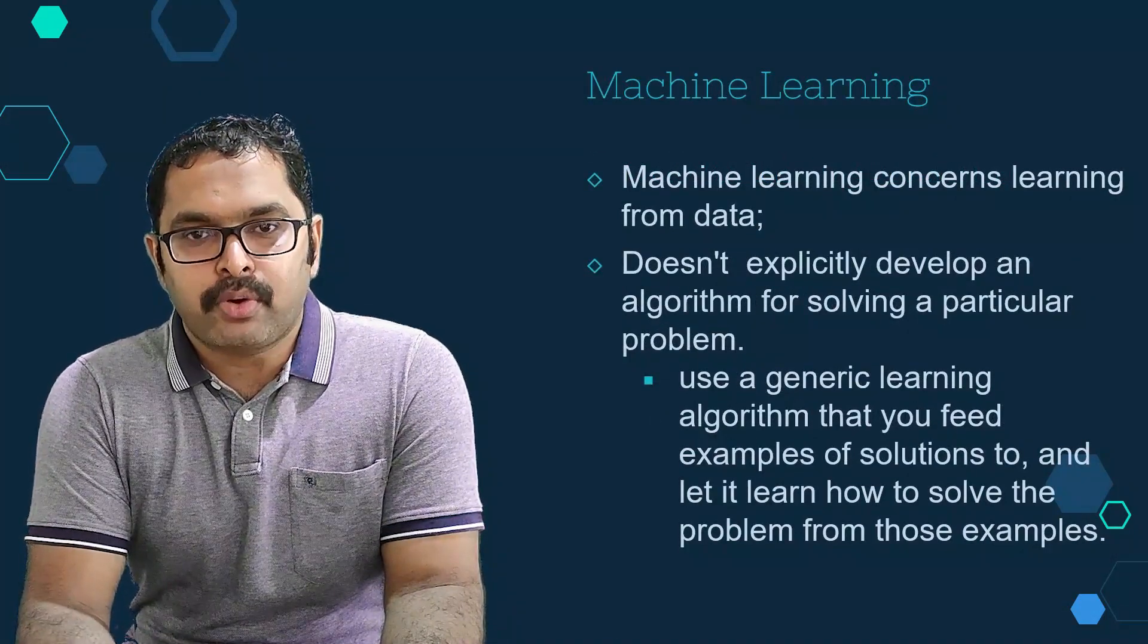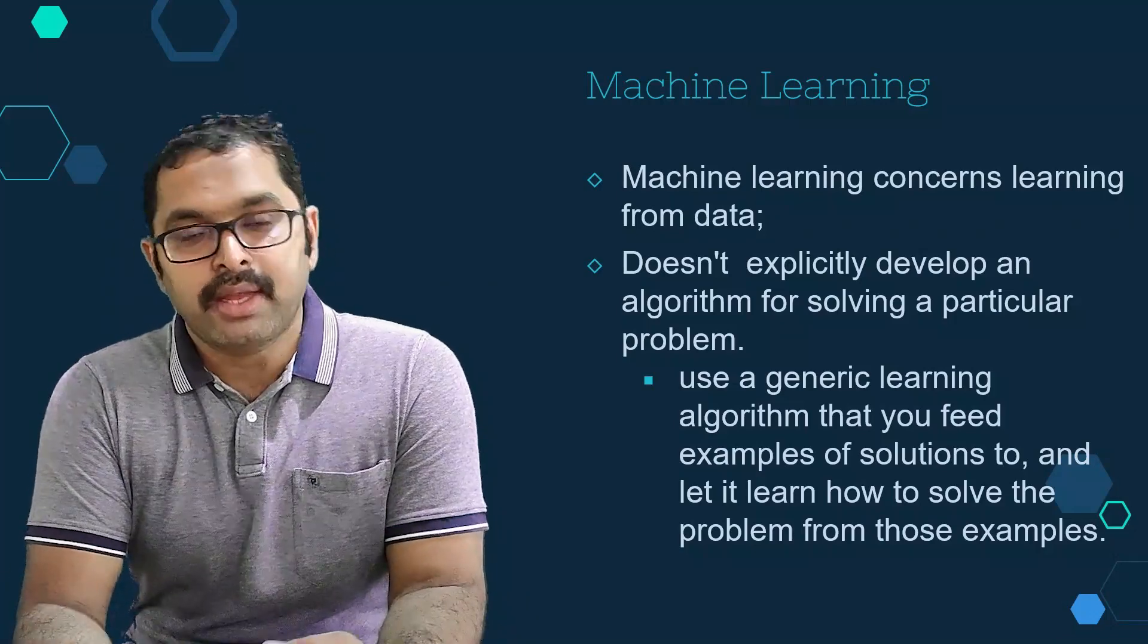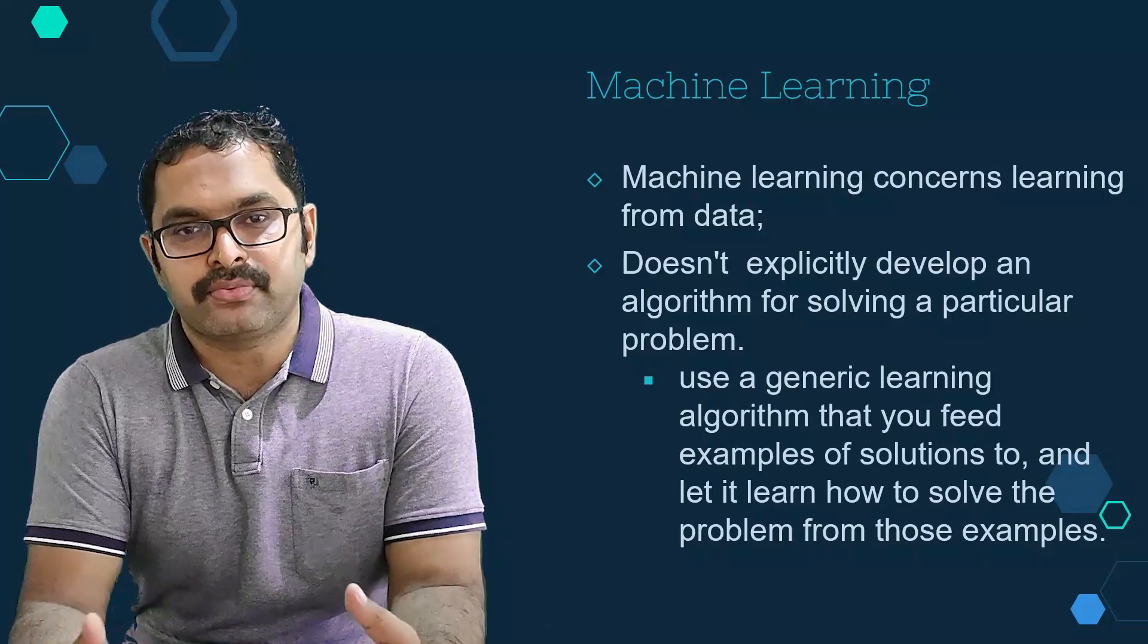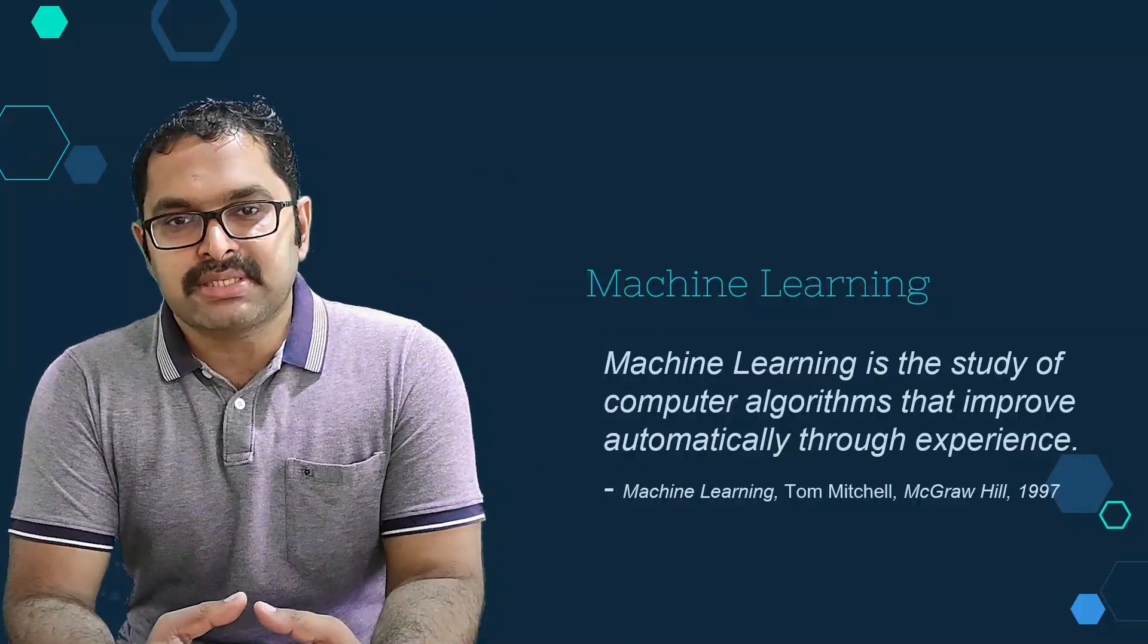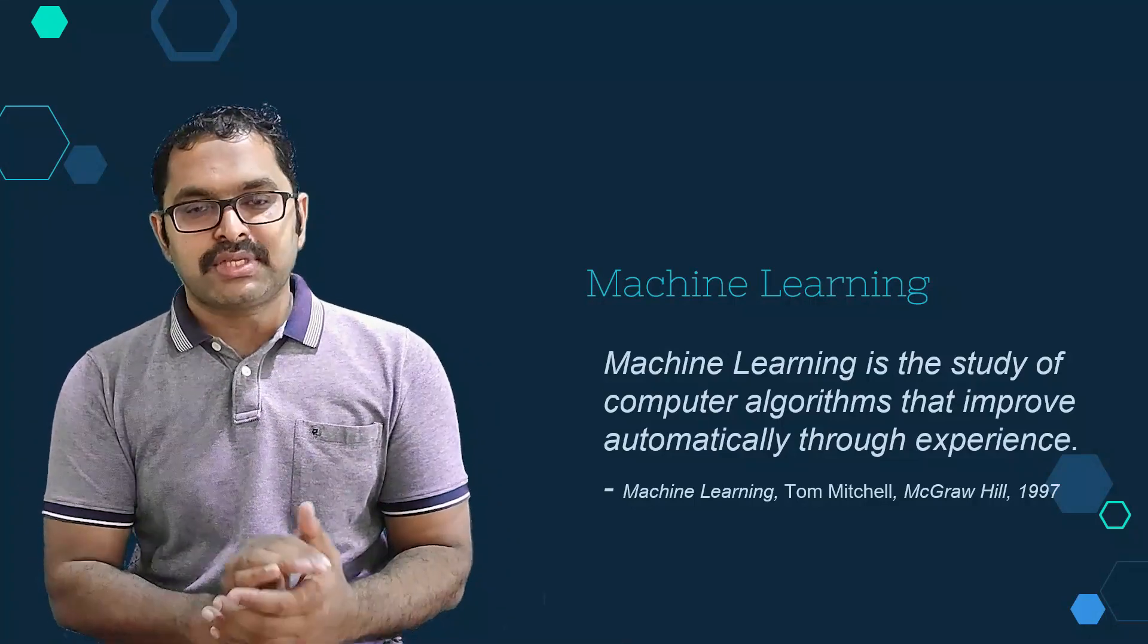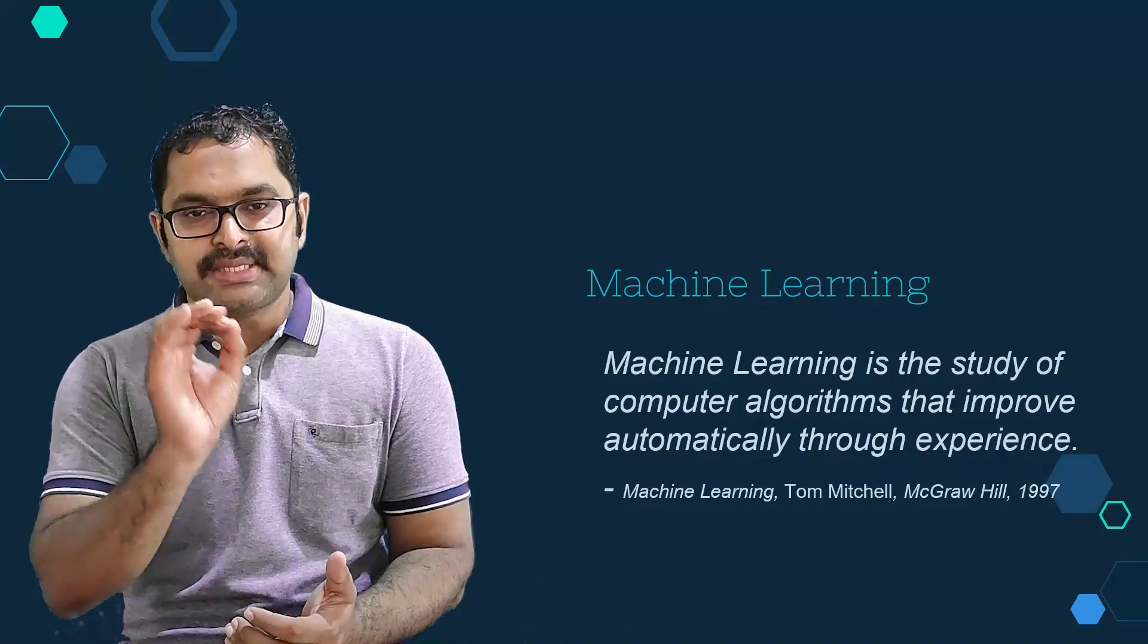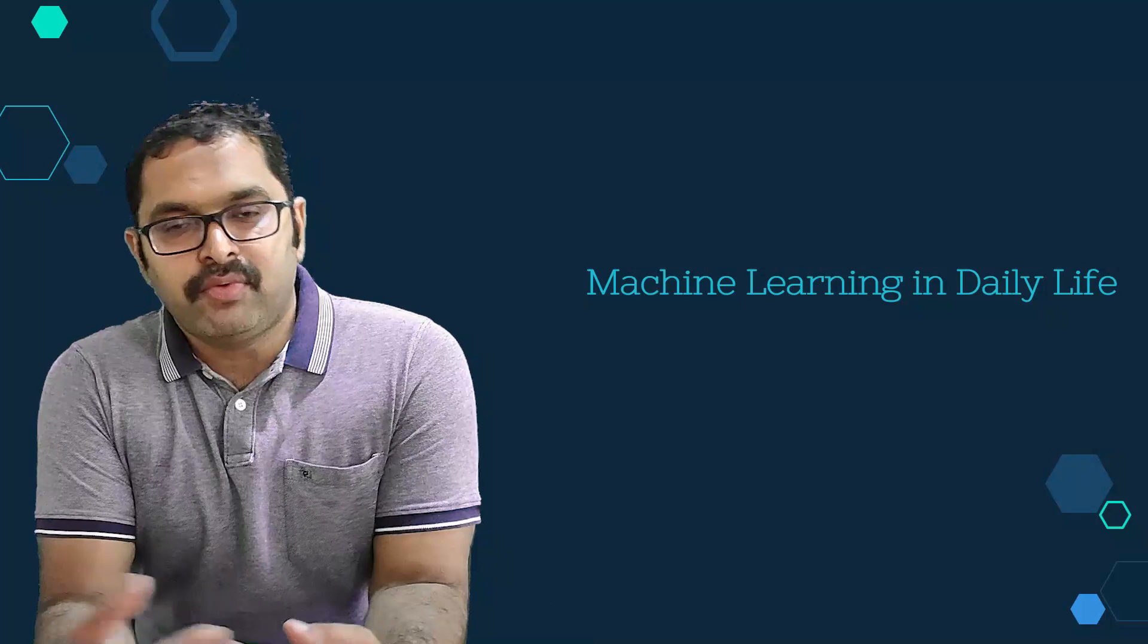It differs from conventional programming by allowing the program to learn from data, learn from examples, and solve problems by itself rather than following a set of instructions. Here we use generic learning algorithms that we feed examples of solutions to and let it learn how to solve the problem from those examples. Machine learning enables a computer system to make predictions or take some decisions using historical data without explicitly being programmed. Every company is incorporating machine learning approaches in one way or the other.